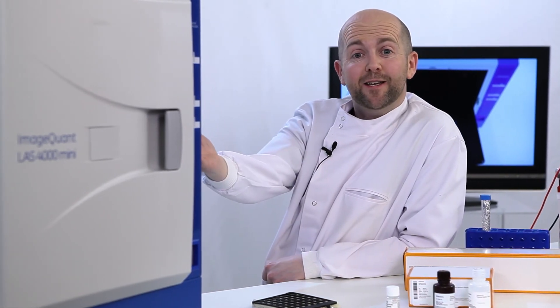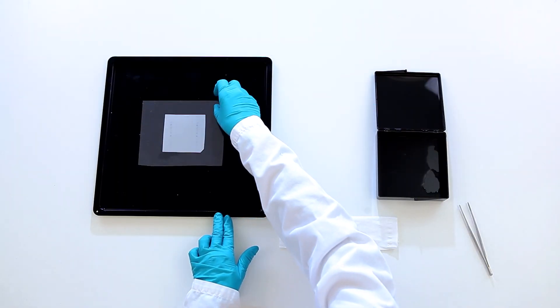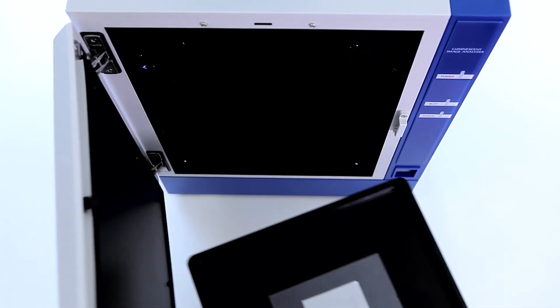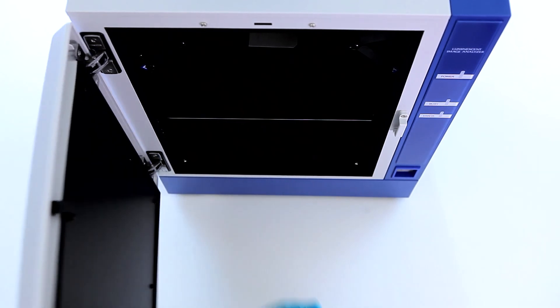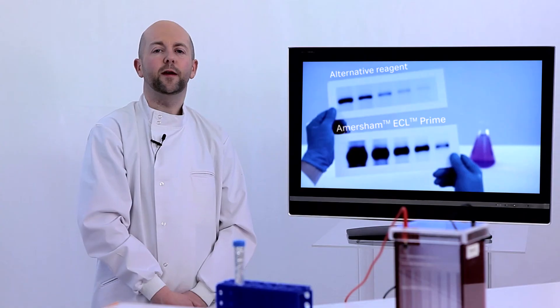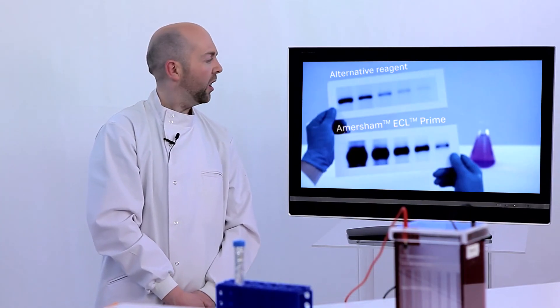Step 4. We can now enjoy the power of our CCD imager. Place the membrane into the CCD imager, the LAS 4000 or 4000 mini. For best results, remember to optimize exposure time. The stable signals let you take repeated exposures to achieve the best sensitivity. It is easy to get fantastic results with ECL prime like these.